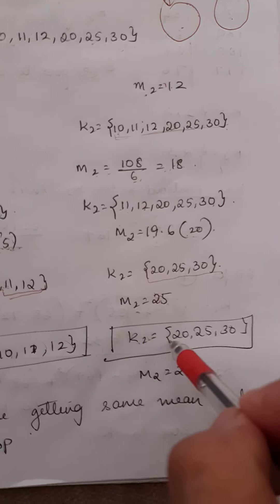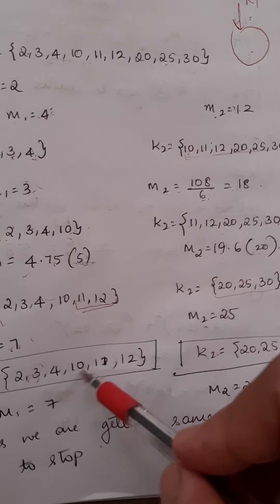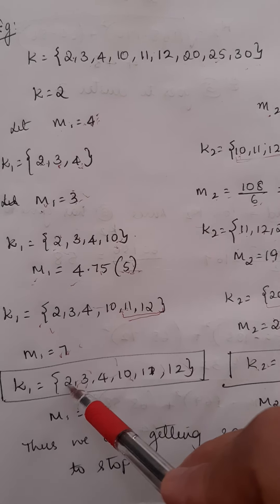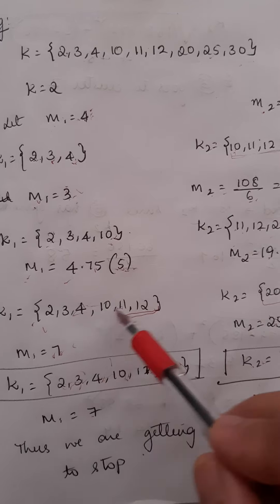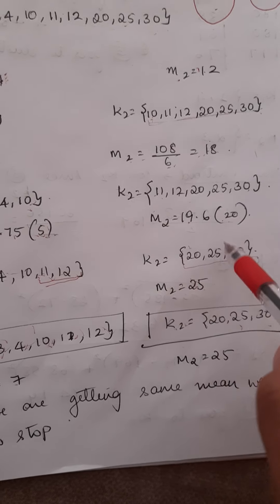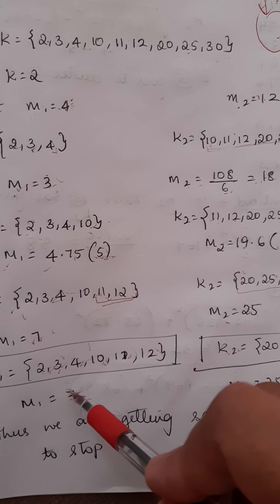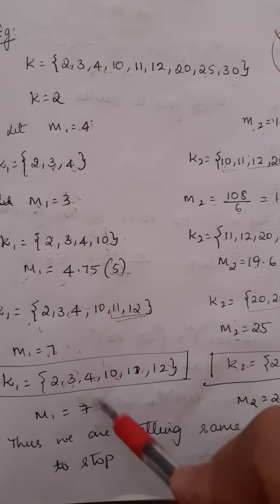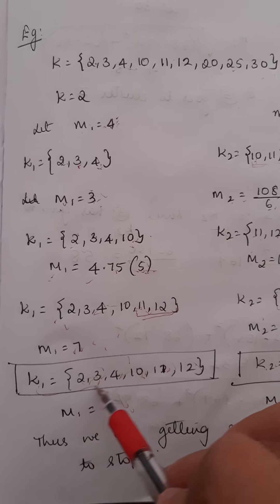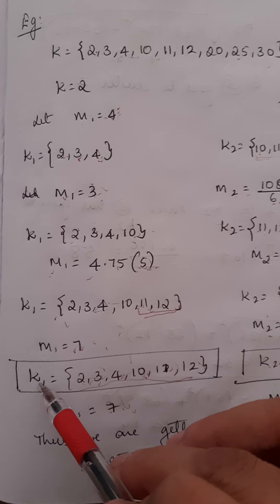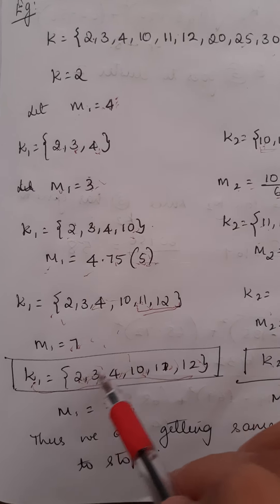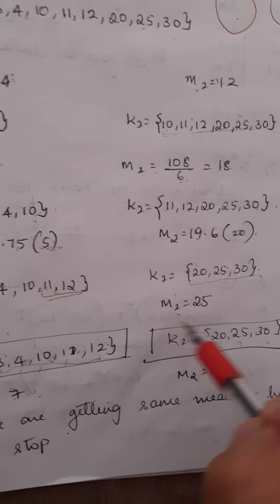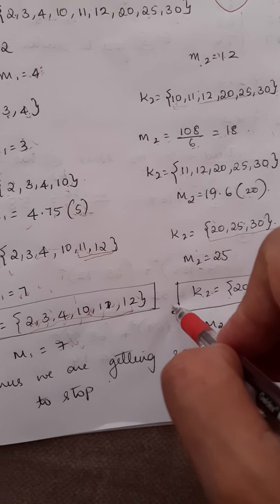Computing differences against 7 and 25, we get K1 equal to {2, 3, 4, 10, 11, 12} and K2 equal to {20, 25, 30}. When I compute the centroid again, m1 is 7 and m2 is 25 — the same as the previous iteration. Since the centroids have not changed, we stop and define these as the final clusters: K1 = {2, 3, 4, 10, 11, 12} and K2 = {20, 25, 30}.